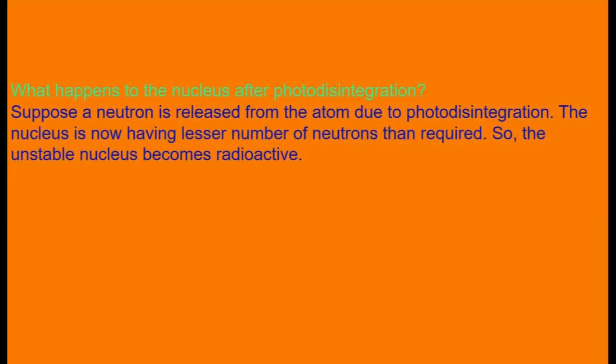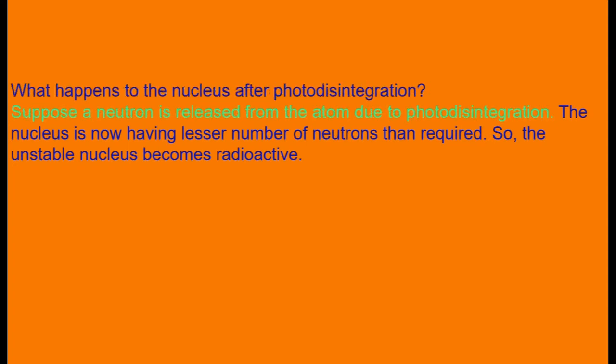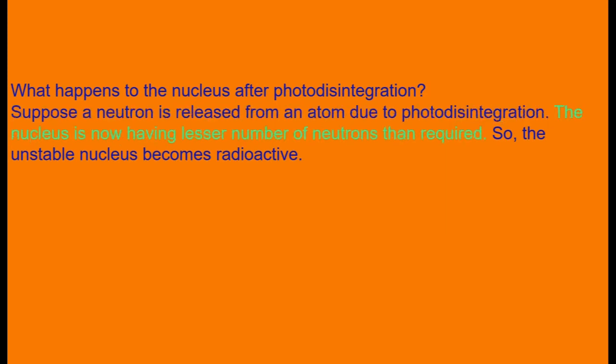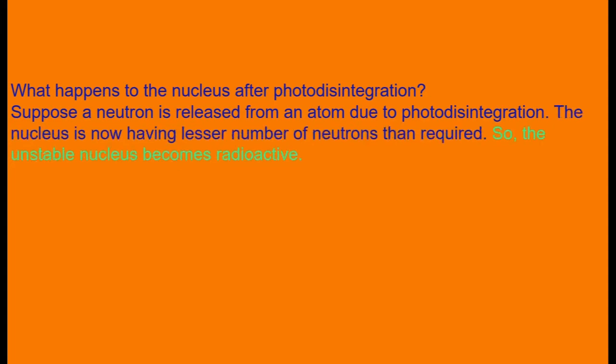What happens to the nucleus after photodisintegration? Suppose a neutron is released from an atom due to photodisintegration. The nucleus is now having lesser number of neutrons than required. So, the unstable nucleus becomes radioactive.